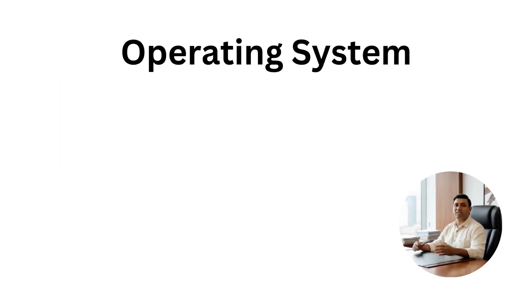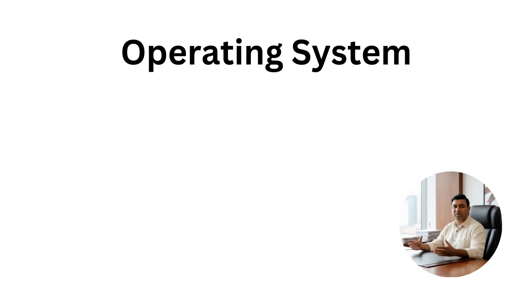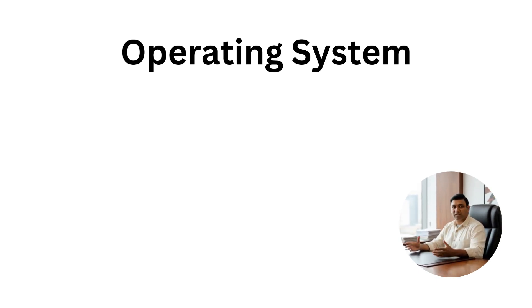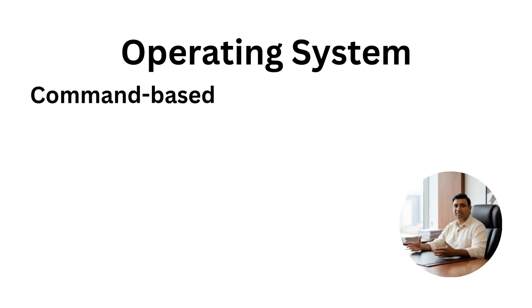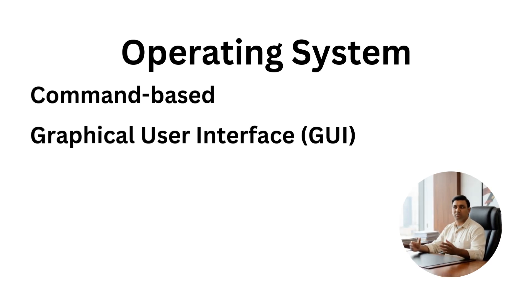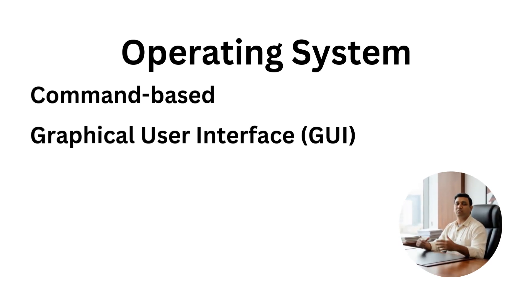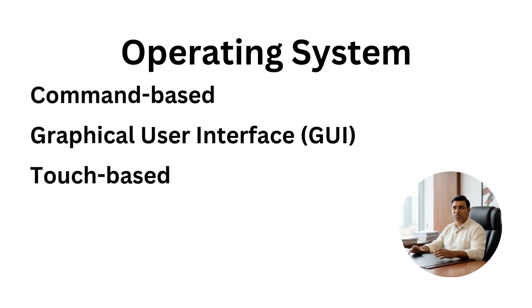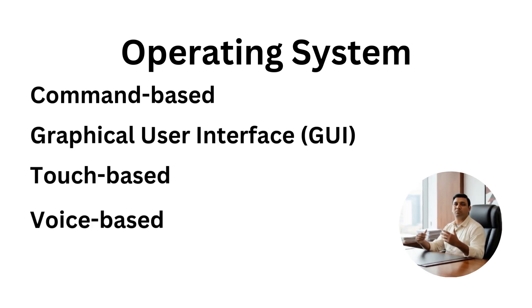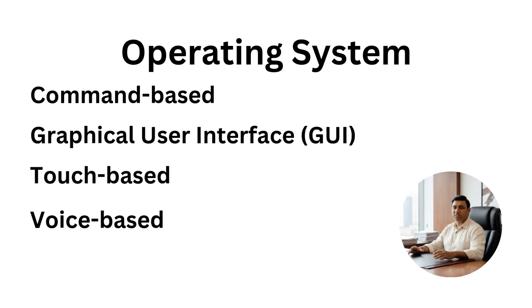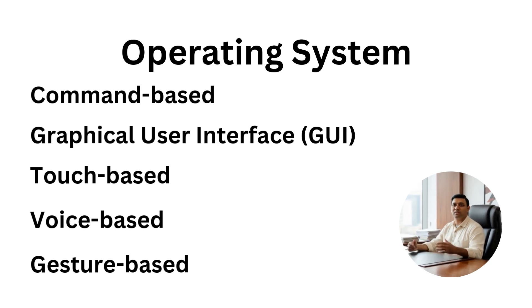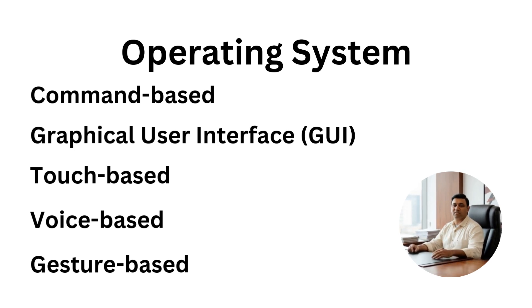Operating system. The operating system, or OS, is the most important system software. It manages hardware, memory, processes, and provides a user interface. Different types of OS interfaces include command-based, like MS-DOS; graphical user interface (GUI), like Windows, Mac OS, Ubuntu; touch-based, like Android and iOS; voice-based, like Siri, Google Assistant, and Cortana; and gesture-based, like modern smart devices. The OS is rightly called the resource manager because it controls and coordinates everything.